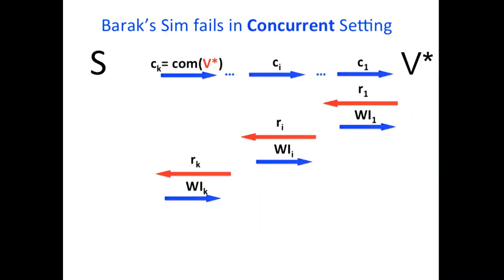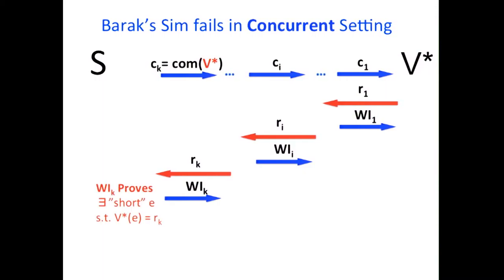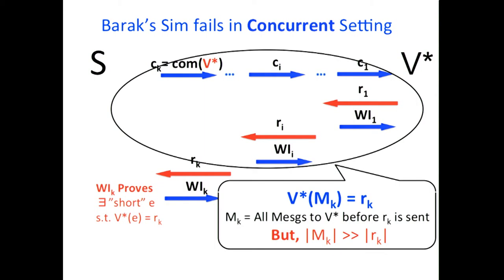Unfortunately, this idea fails in the concurrent setting. When the verifier receives more than one proof, the Brak simulator attempts to prove in the final WI that V* on some short input outputs the challenge Rk. But in the concurrent setting, the input V* has received before outputting Rk is unbounded — it could be much, much longer than the length of the random challenge. Therefore, the simulation doesn't go through.